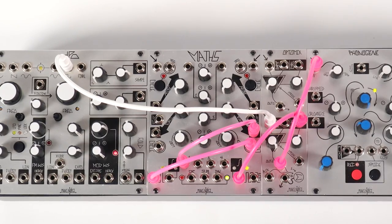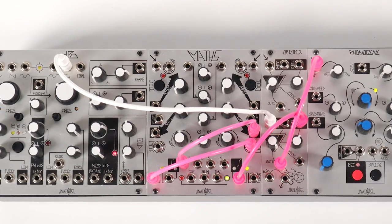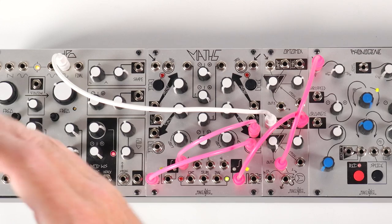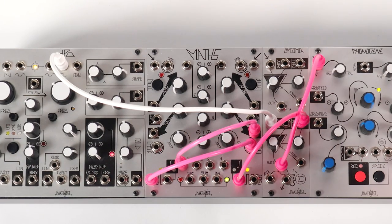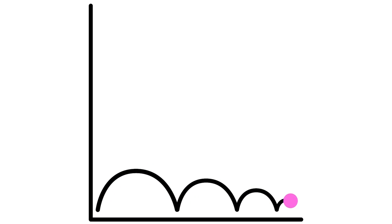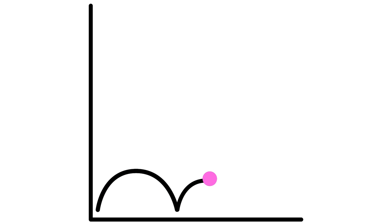If you're unfamiliar, the bouncing ball patch is a modulation patch which simulates the physics of a ball bouncing. When anything bounces, gravity robs the object of some of its inertia, resulting in less height with each bounce, and less time between bounces because of it, ultimately bringing the object to a stop on the ground.